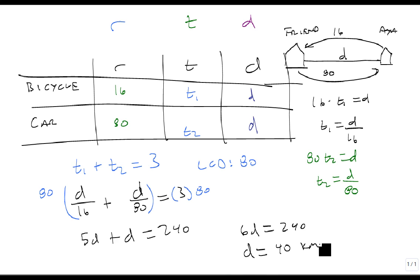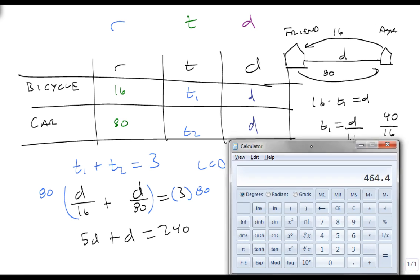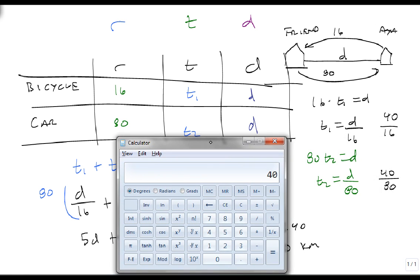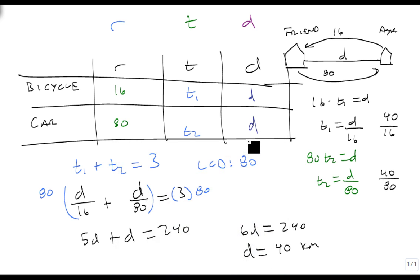In order to check this answer — and that seems to make some sense — let's double check. 16 times T1 equals 40, so T1 is 40 over 16. And 40 over 80 is T2. Using a calculator, 40 divided by 16 plus 40 divided by 80 equals 3. We spent 2 and a half hours on the bicycle leg and a half hour in the car, for a total of 3 hours. Our answers work out, and we used our uniform motion problem to solve this problem.